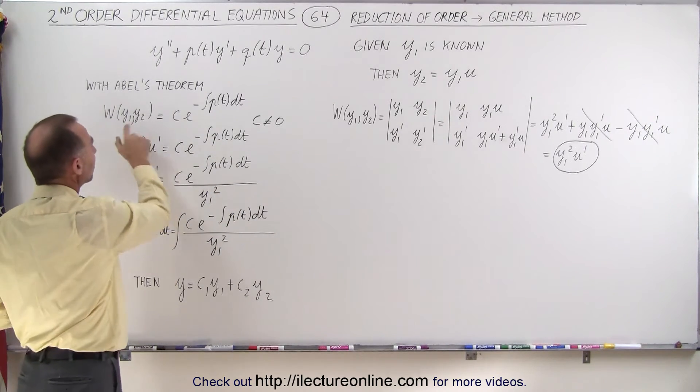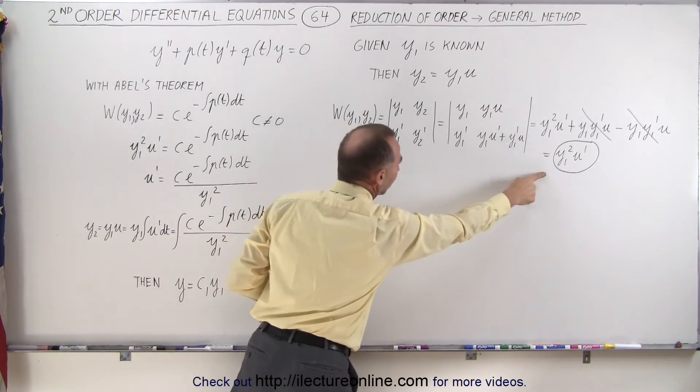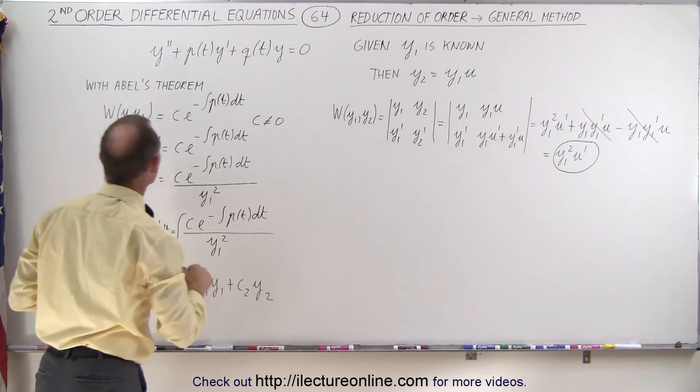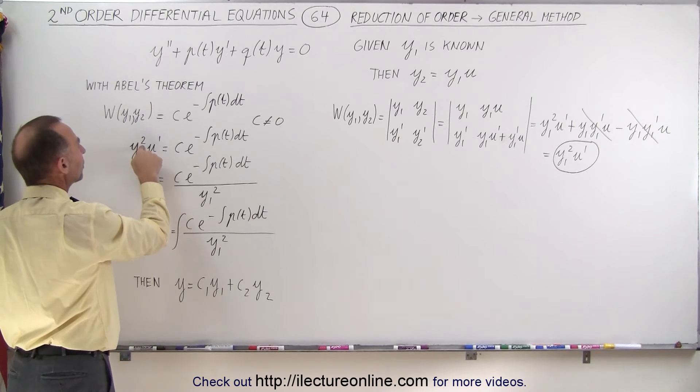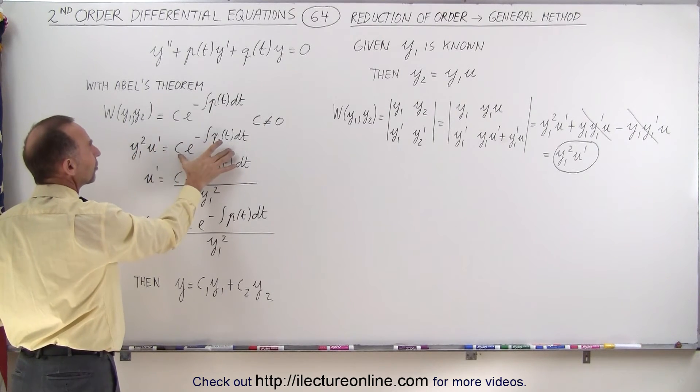Since the Wronskian is equal to this, and the Wronskian is equal to that, we can set those two equal to each other, and so y1 squared u prime equals this on the right side.